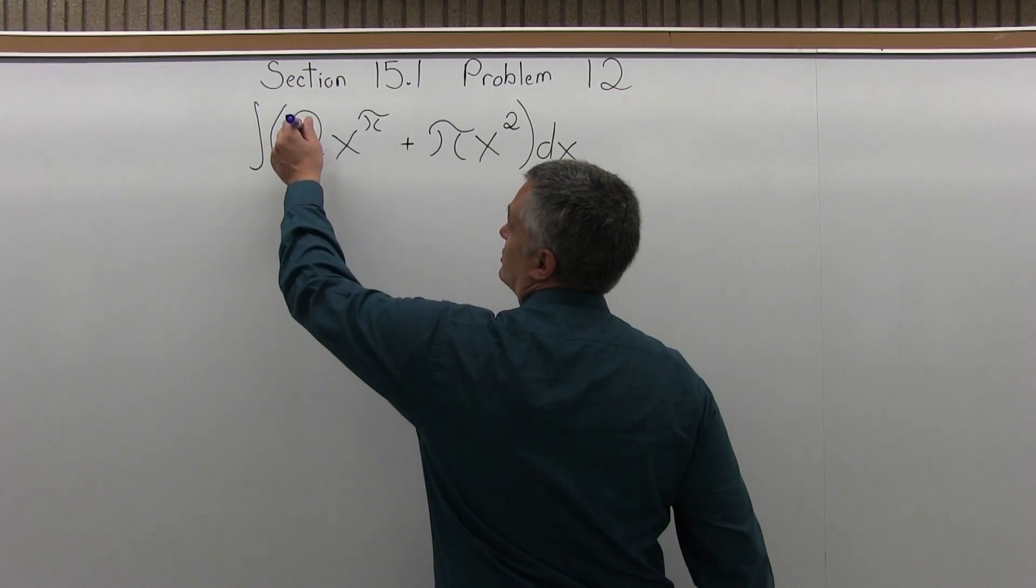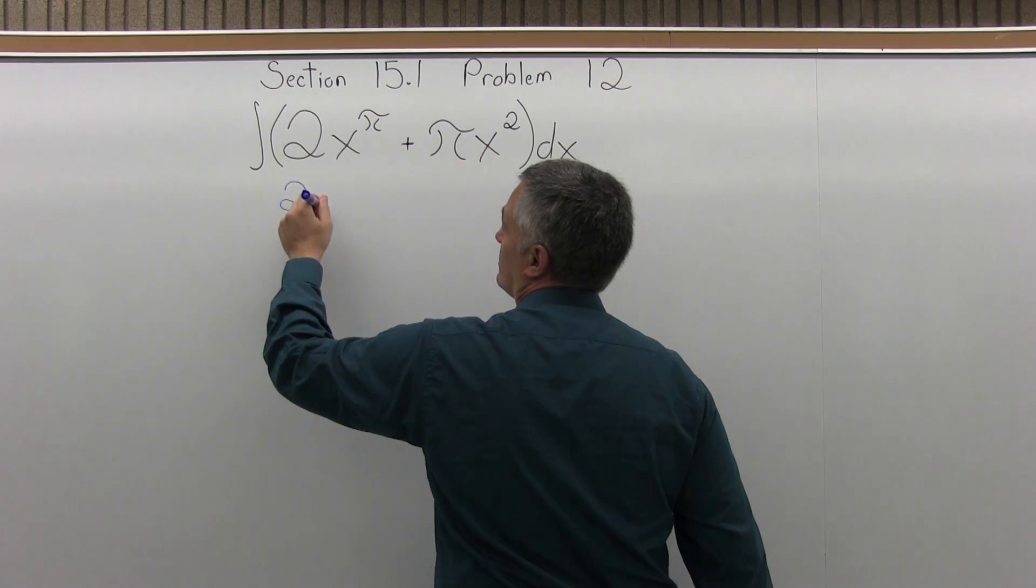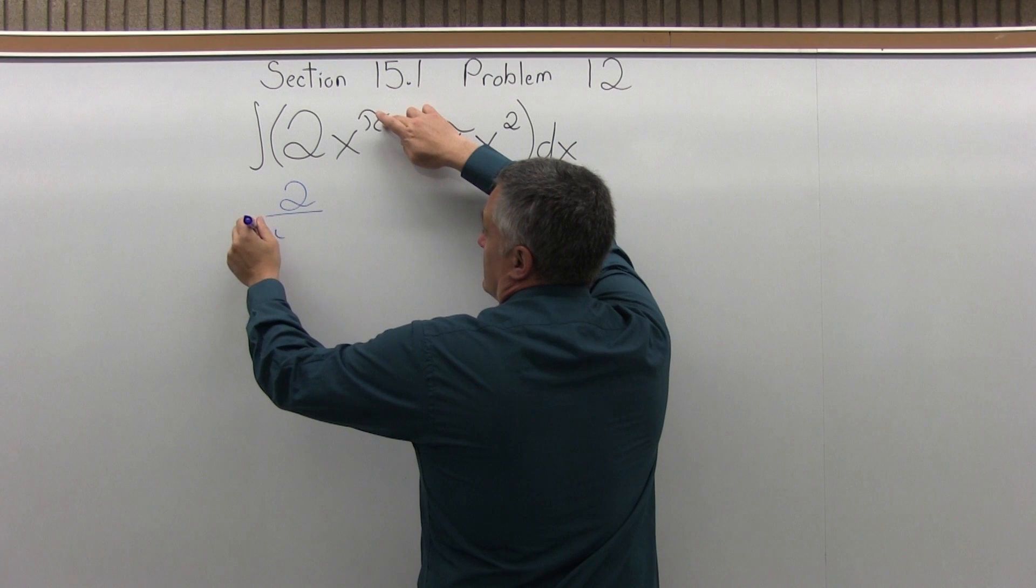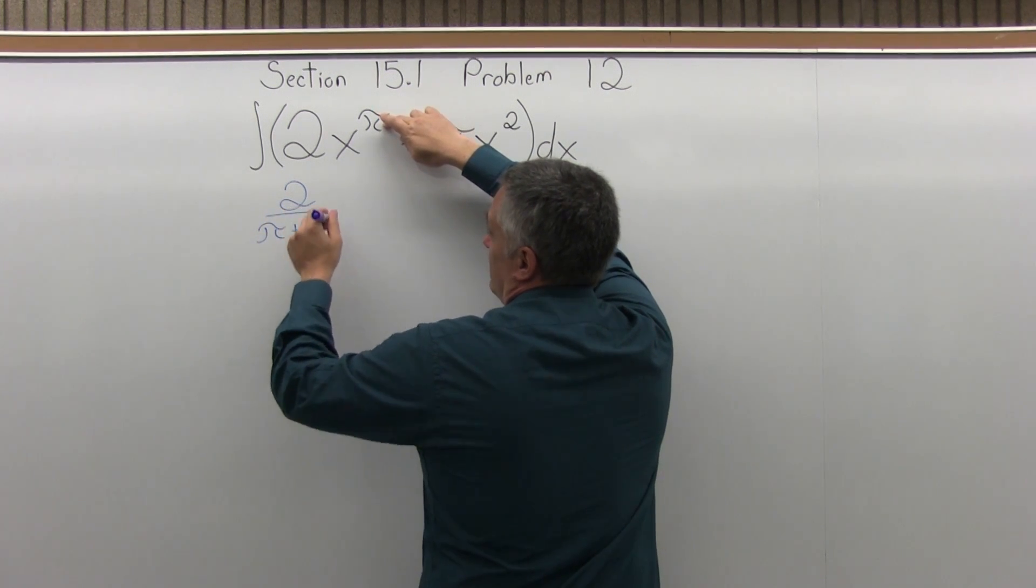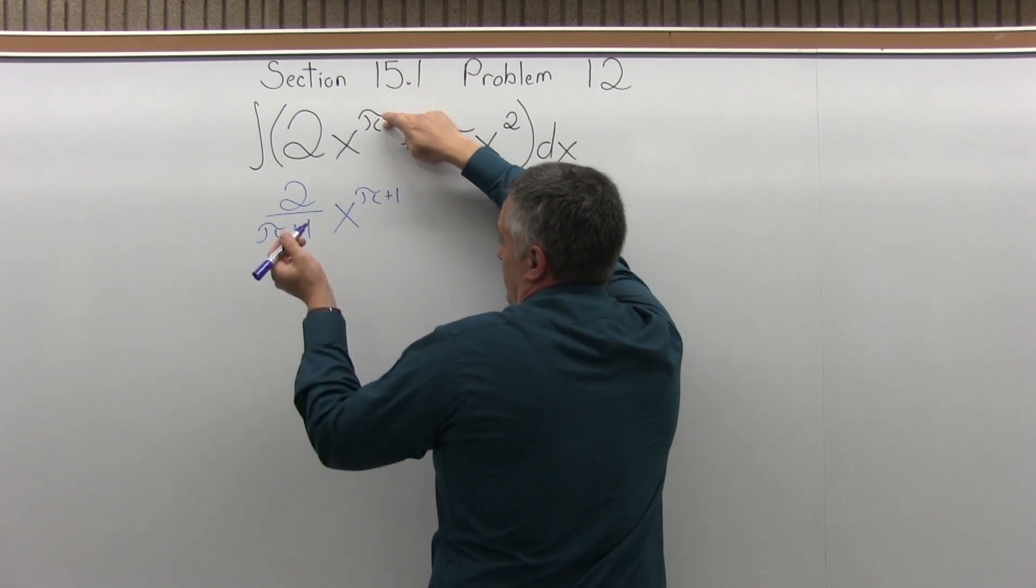So this 2x to the pi, what we're going to do is the number in front 2 will stay in the numerator, and then the denominator is the previous exponent plus 1, so pi plus 1. x to the new exponent is the old exponent plus 1, so pi plus 1.